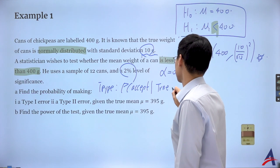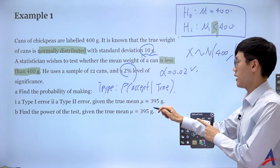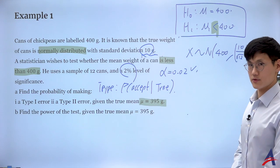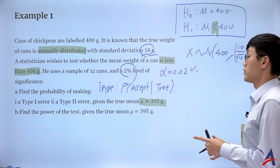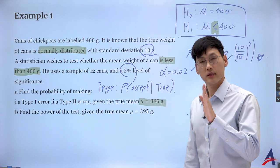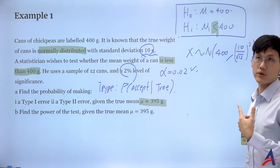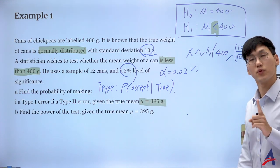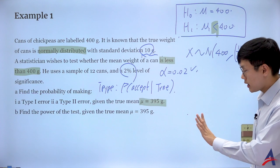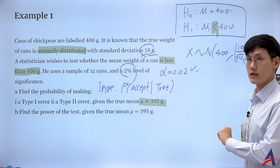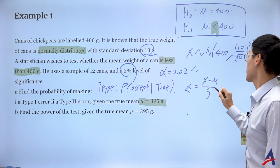Type 2 error is about the acceptance region given the true distribution. I can't find the true mean from the alternative hypothesis alone, so they give me the true mean mu = 395. I need to define my true distribution. They've shifted the mean to 395, but I want to work with the same form of distribution, so I'll standardize to convert from X to Z using this different mu.